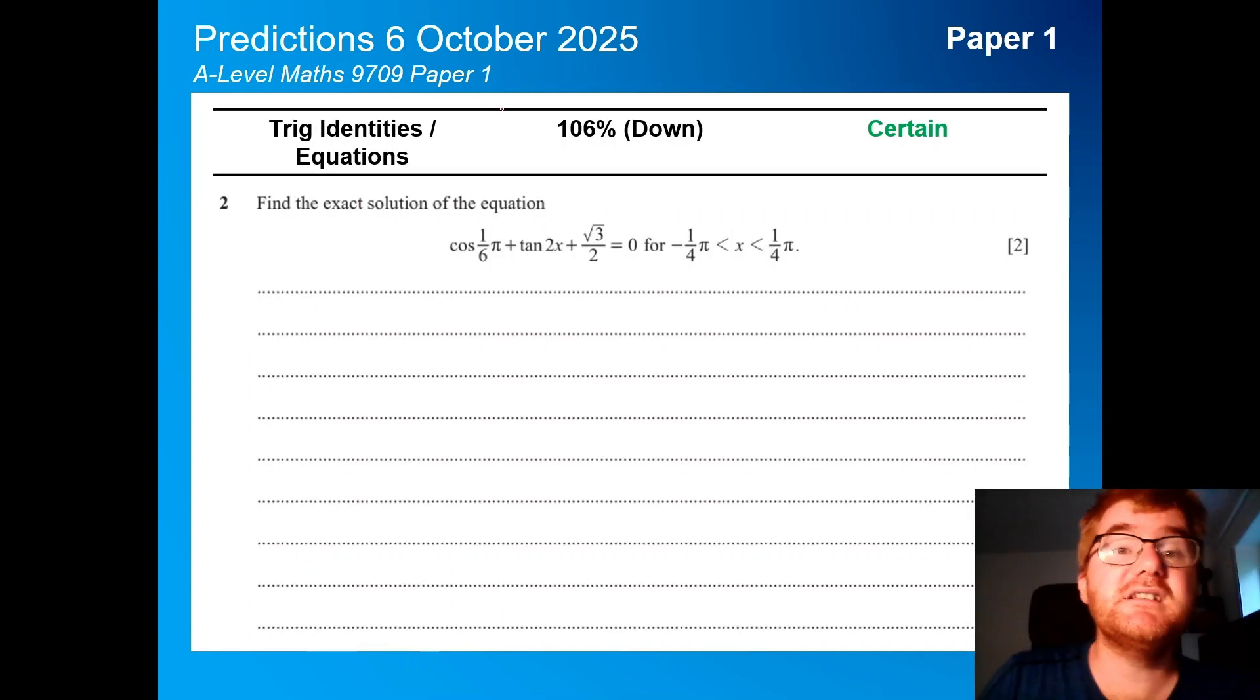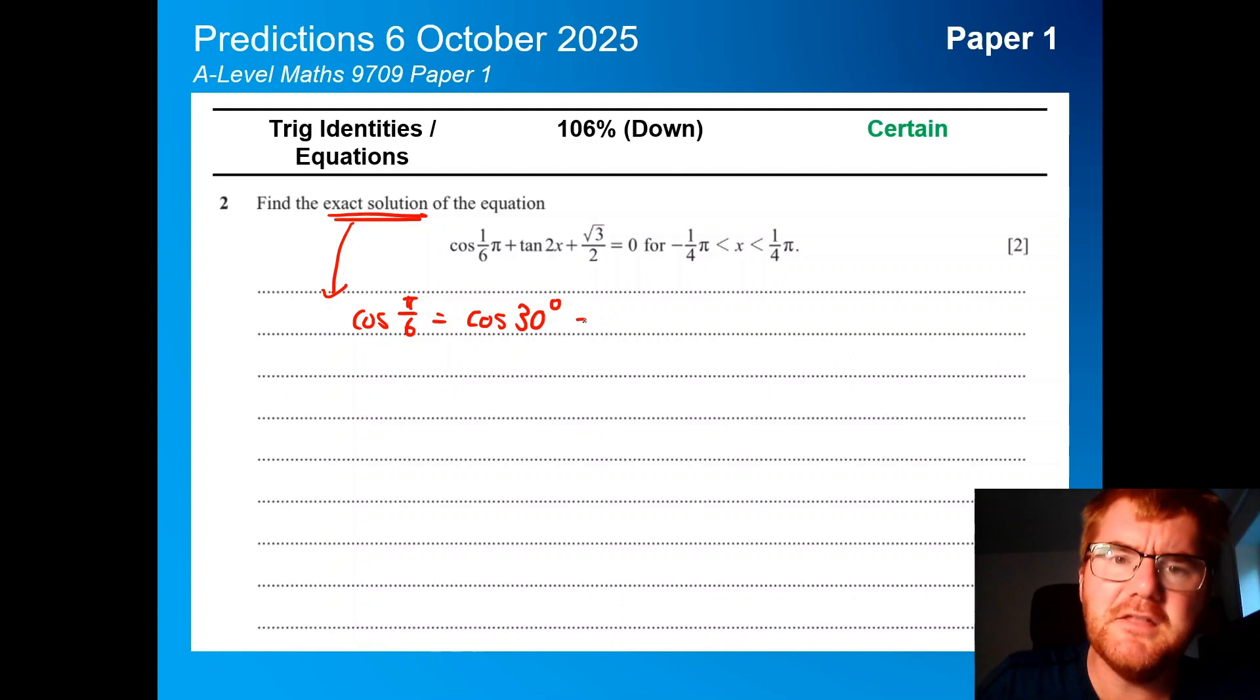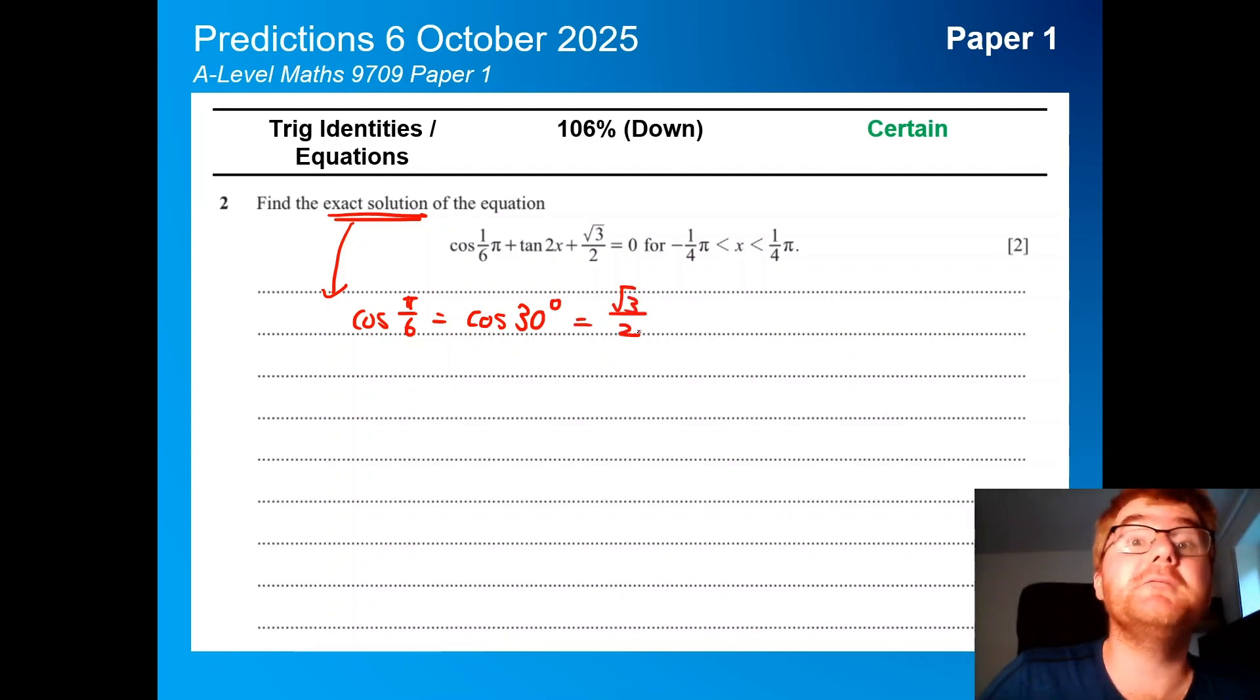Trig identities equations, slightly down here at 106%, but I would say that's just general fluctuations between the papers, maybe not putting so much emphasis on this. Notice they can also do this, so the exact solution, and that means you really can't use a calculator. You need to know them in terms of root 3 over 2 or a half, so knowing what cos pi over 6 is, so this is cos 30 degrees, and knowing that's equal to root 3 over 2 is a really important fact here.